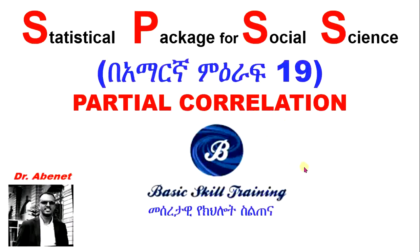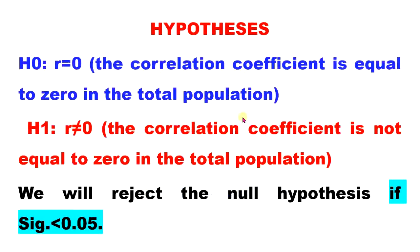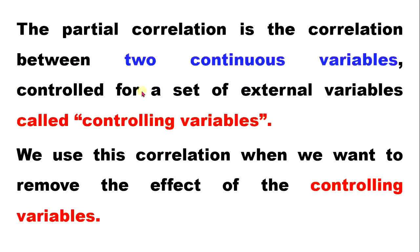Partial correlation in statistics. The null hypothesis is that the correlation coefficient is equal to zero, like the Pearson correlation. If R is different from zero, positively or negatively, and the p-value is less than 0.05, we reject the null hypothesis. The partial correlation is the correlation between two continuous variables controlled for a set of external variables called controlling variables.